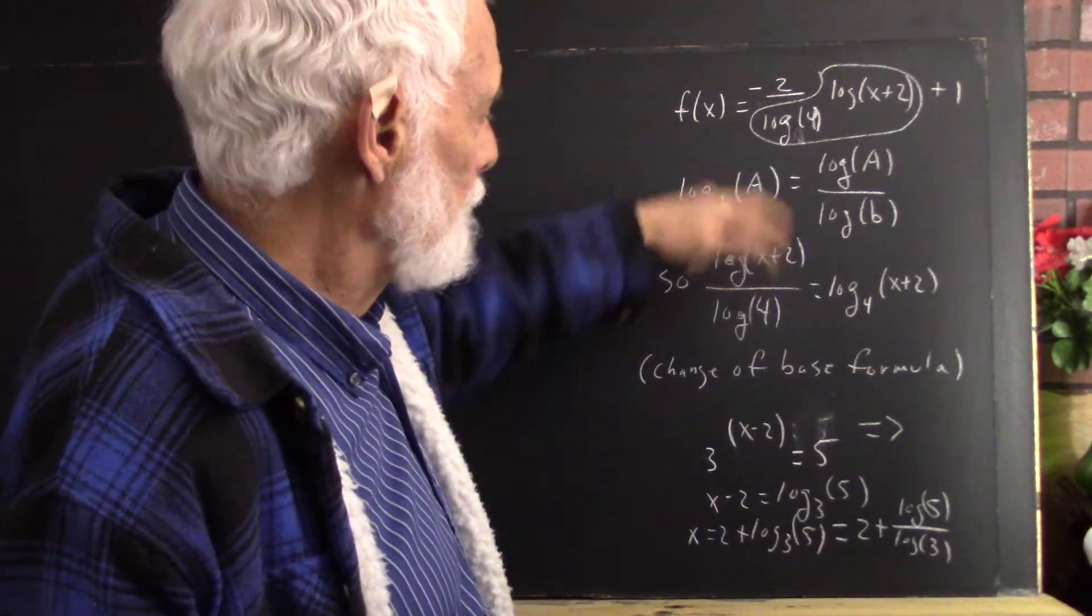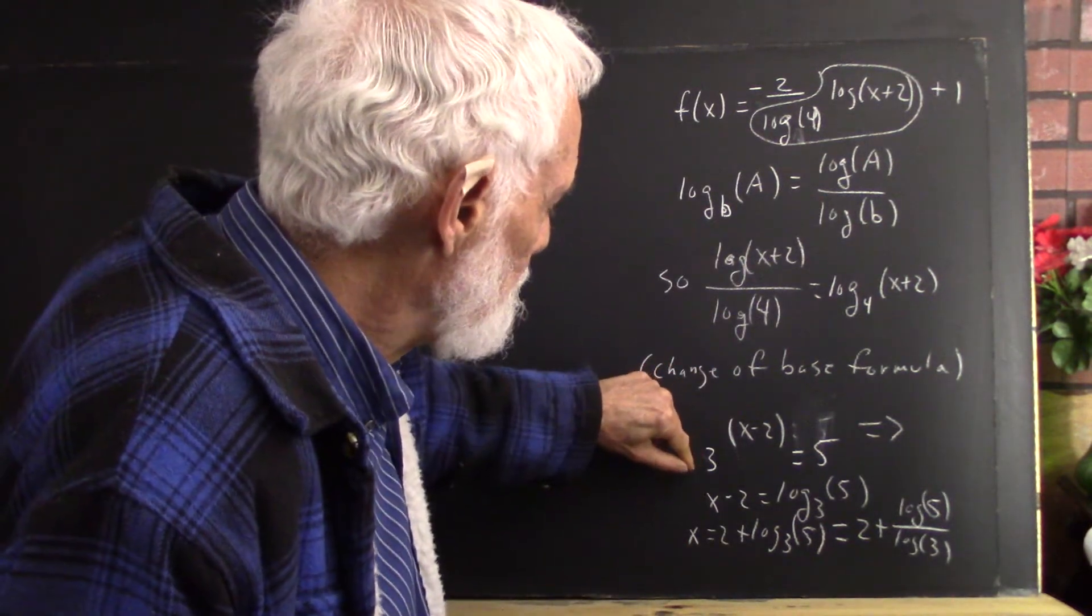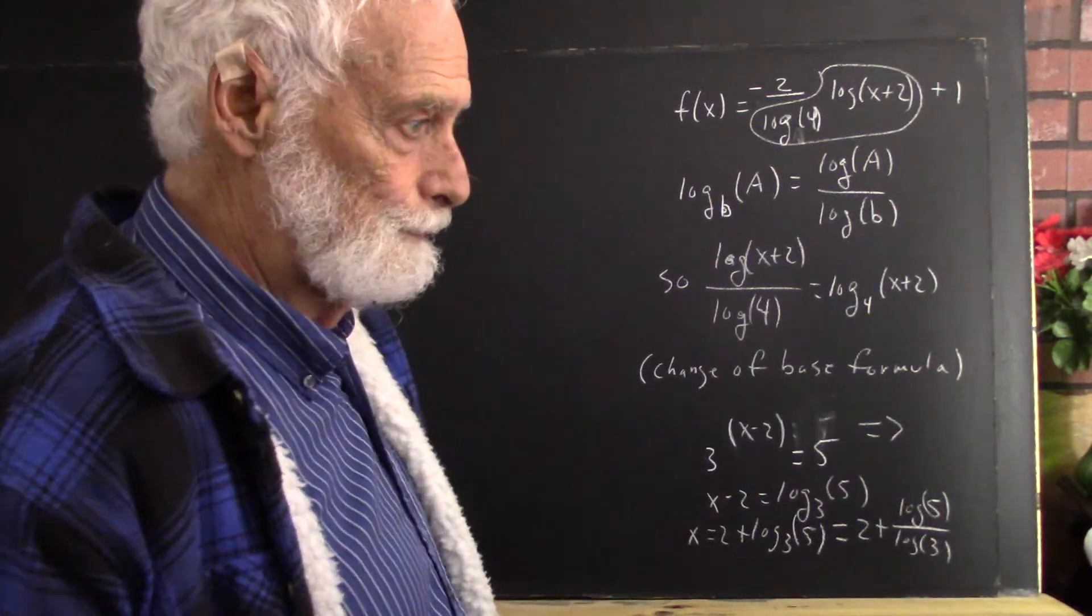Now we're applying the rule in a slightly different context than we did if, for example, we solve 3 to the x minus 2 equals 5.